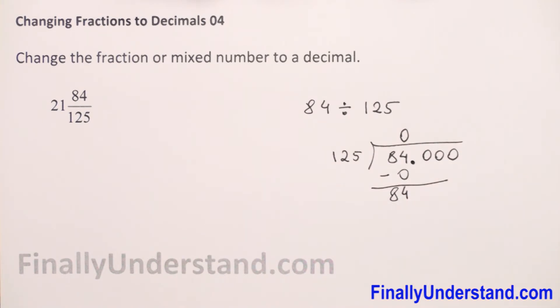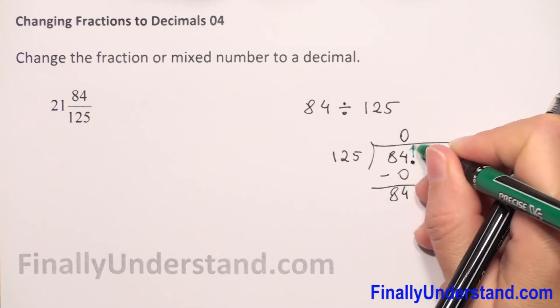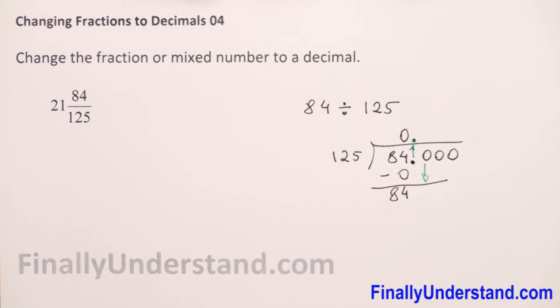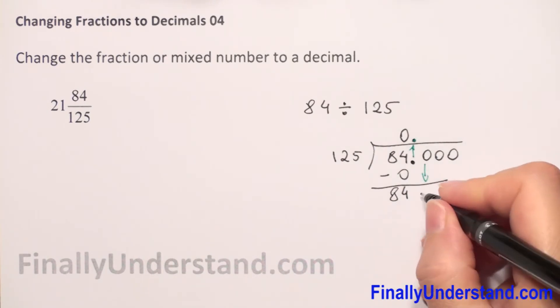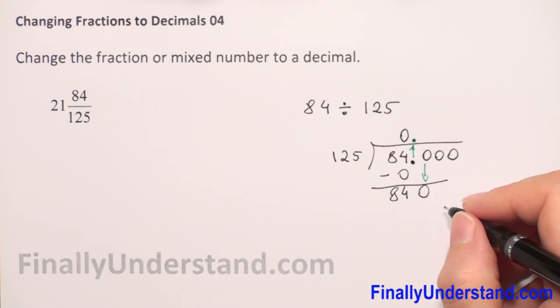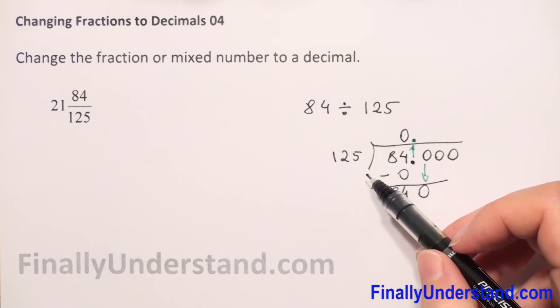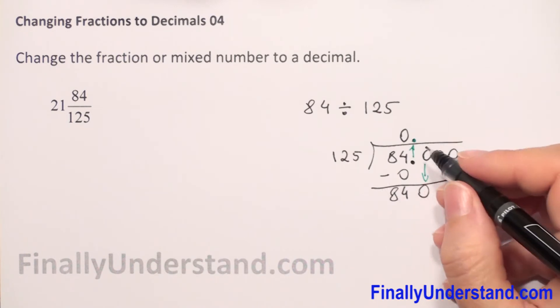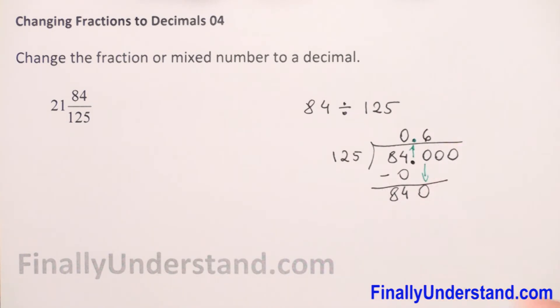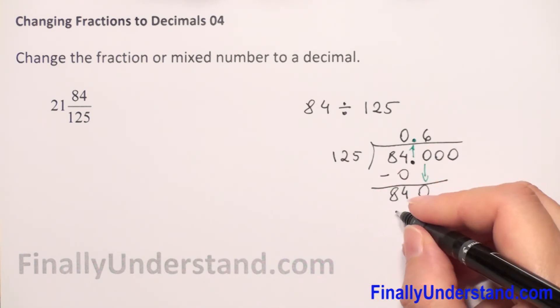What next? We have to put the decimal point exactly in the same column and take down the next digit. So we have 840 divided by 125, which will be 6. 6 times 125 is 750.